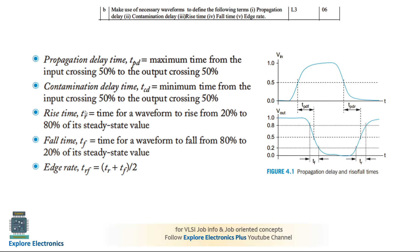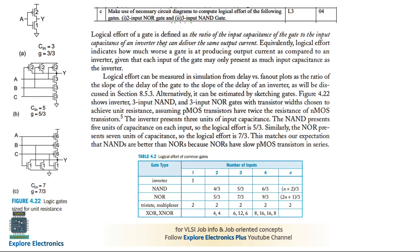Rise time is the time for the waveform to rise from 20% of the value to 80% of the value — for example from 0.2V to 0.8V for a 1V supply. Fall time is from 80% to 20%. Edge rate is the average of rise time and fall time divided by 2.